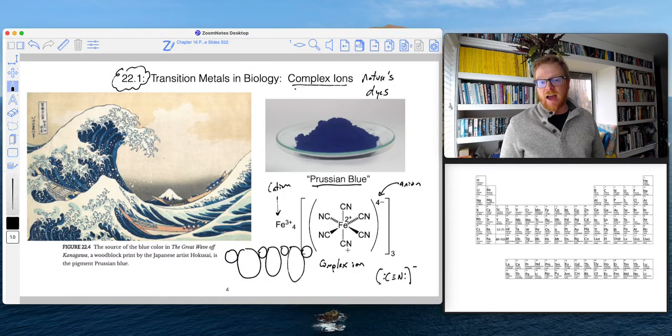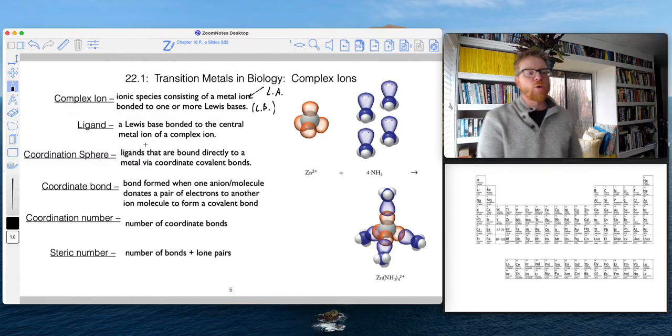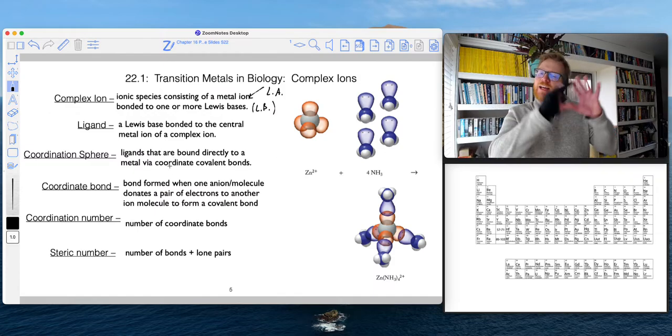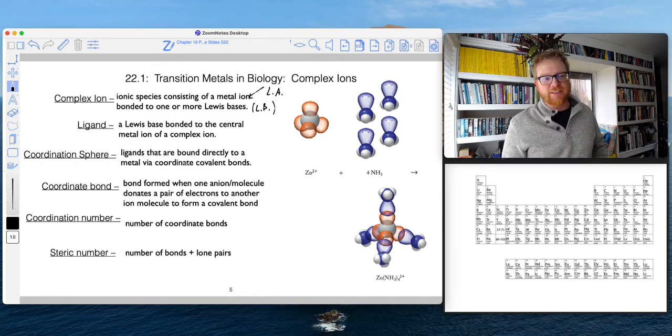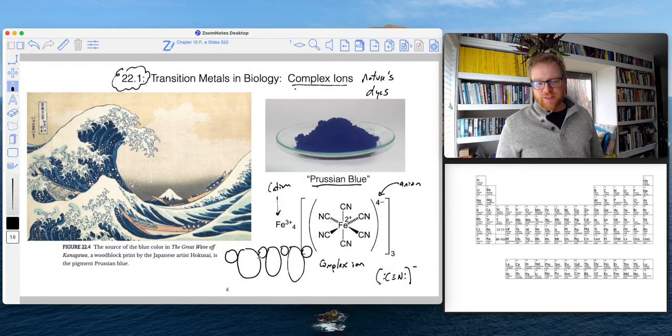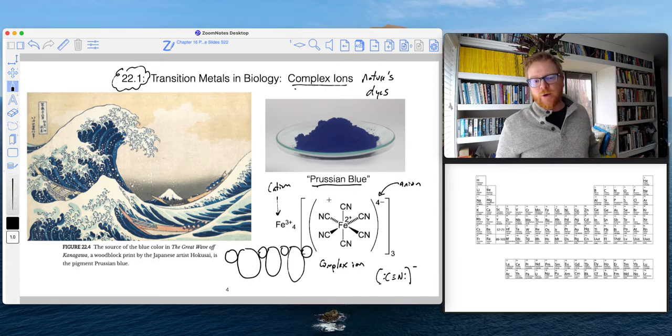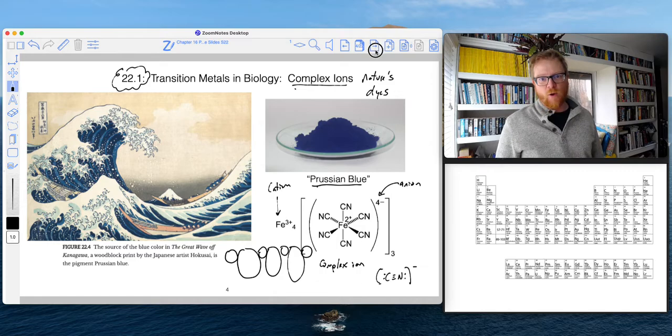The coordination sphere - it's kind of like the whole thing. So it's the ligands that are bonded directly to the metal via coordinate covalent bonds. So like when I drew this whole big circle right here kind of representing this Prussian Blue or really the complex ion, that would represent like the entire coordination sphere. So the coordination sphere is like the whole thing - the whole complex ion.